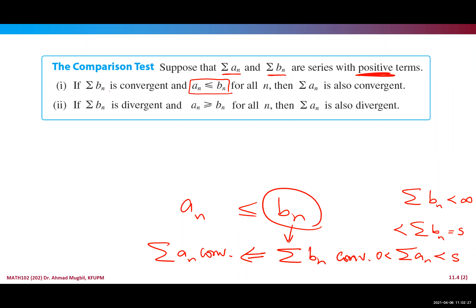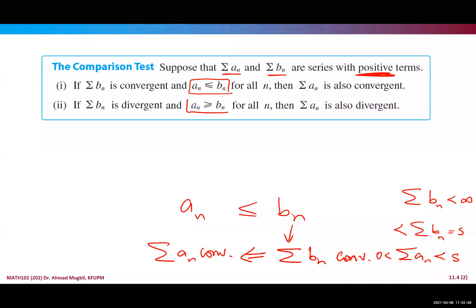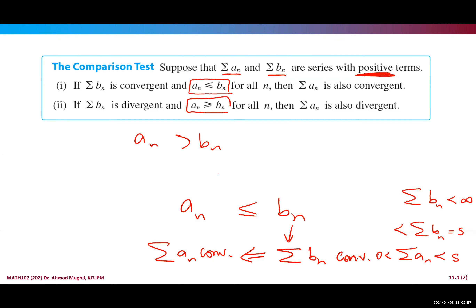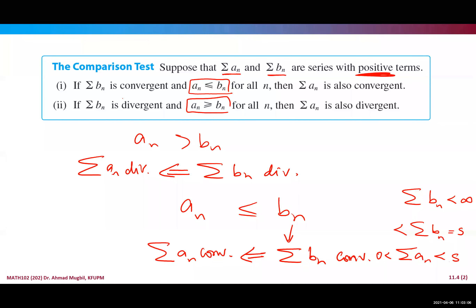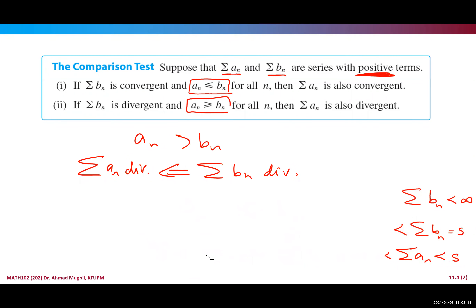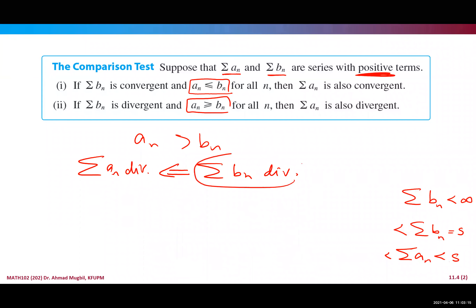To repeat: if a_n is less than b_n and the bigger series is convergent, then the smaller one is also convergent. The second case is: if a_n is greater than b_n and b_n is divergent, then a_n is also divergent. If something is bigger than a divergent series — informally bigger than infinity — it is also divergent.